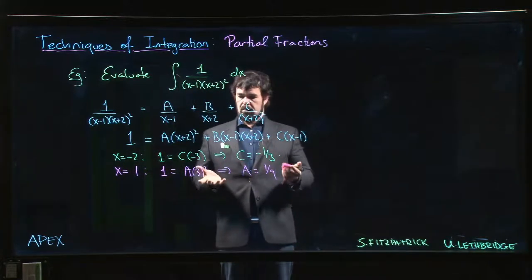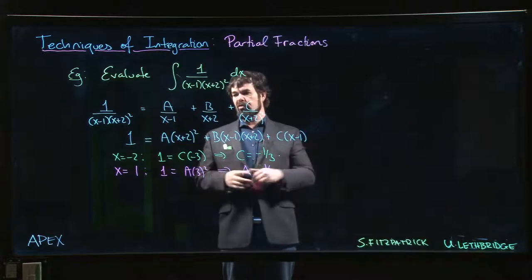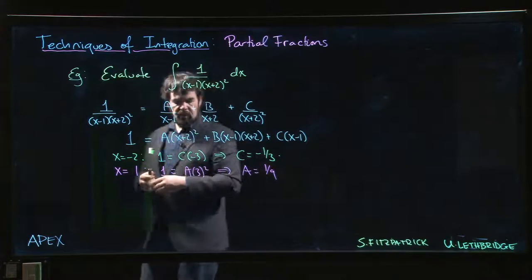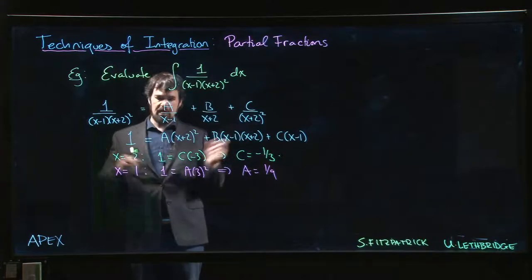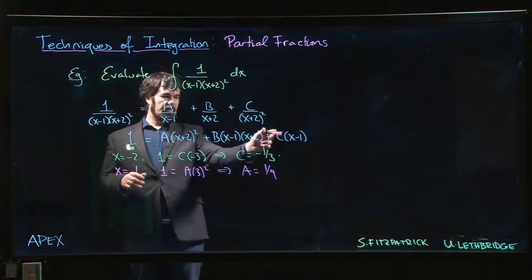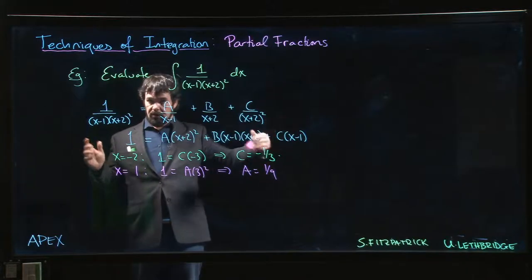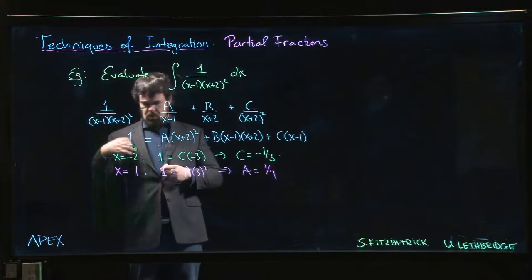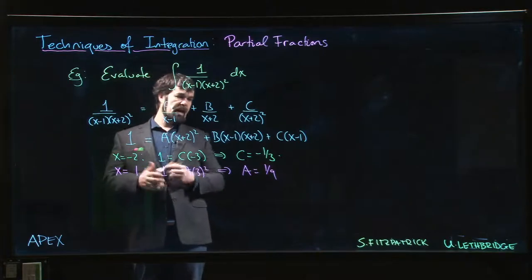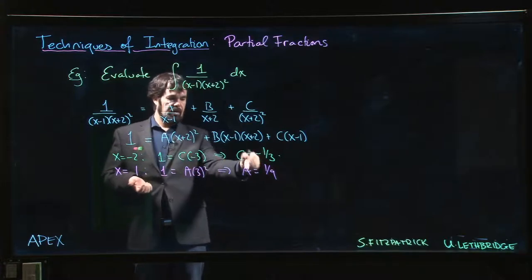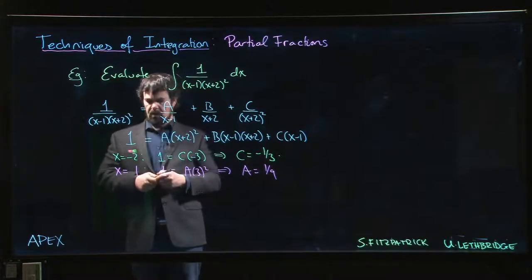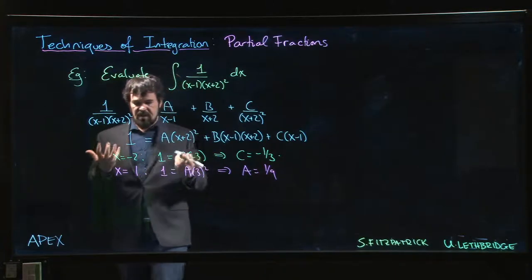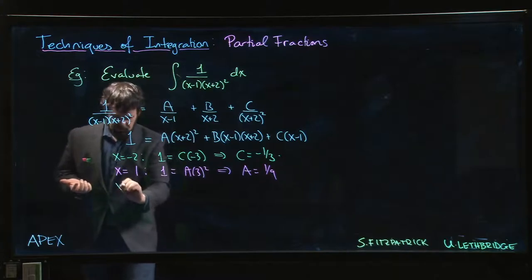The trouble with this is we're missing B, right? So we don't get B. Now there are some different approaches that you could take to solve for B, but typically what we do in this situation is we say look, we've already got two out of the three, we've only got one remaining. We've exhausted all the kind of easy ones to plug in where two out of the three terms disappear and we can just solve for the one that's left over. So you just pick some other value and you use the fact that we already know what A and C are equal to.